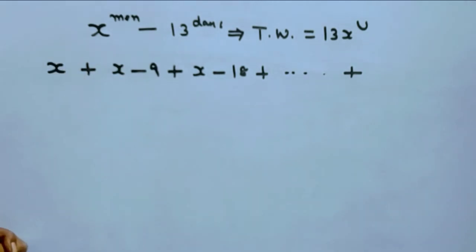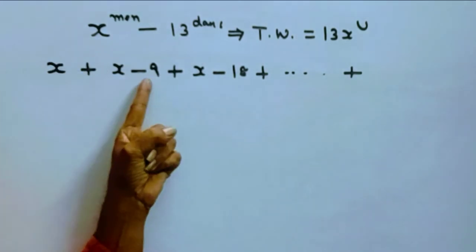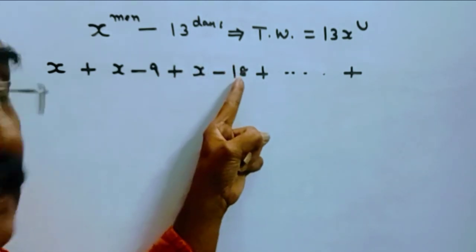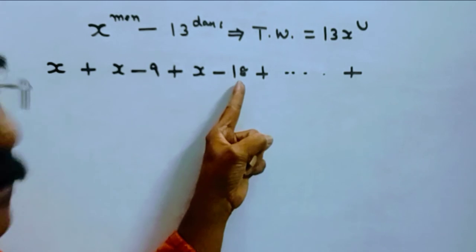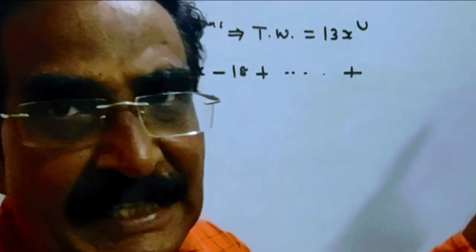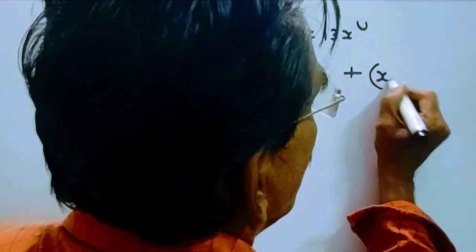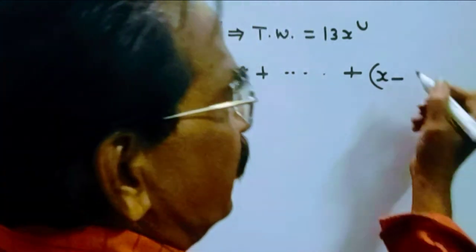So on 16th day, on 16th day, see friends, second day 9 into 1, third day 9 into 2. So on 16th day 9 into 15, so X minus 9 into 15.